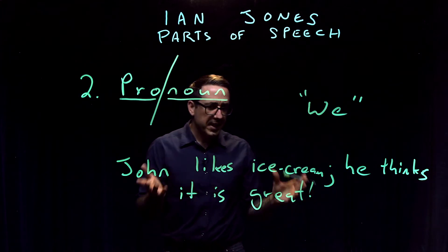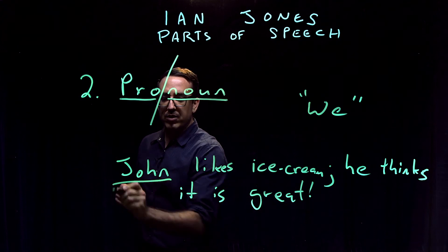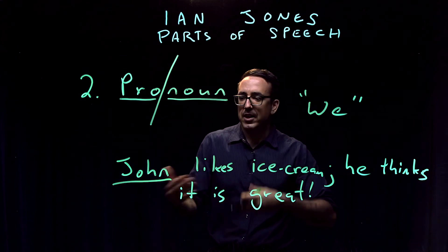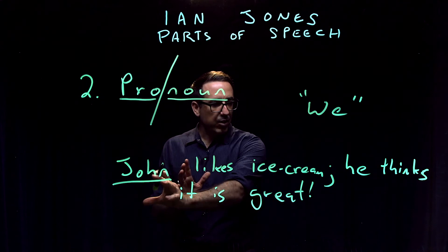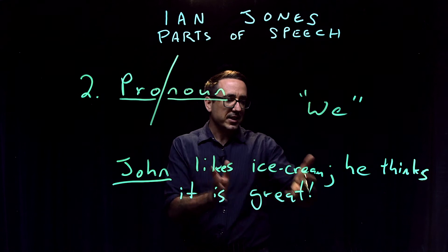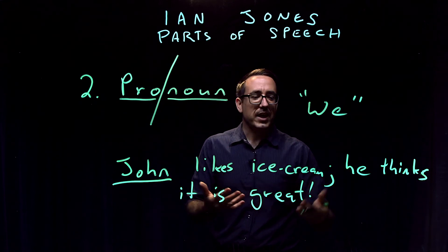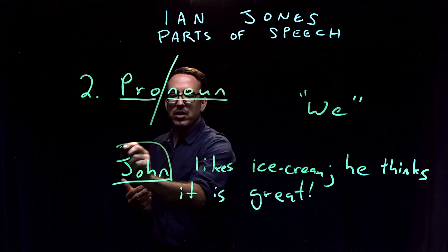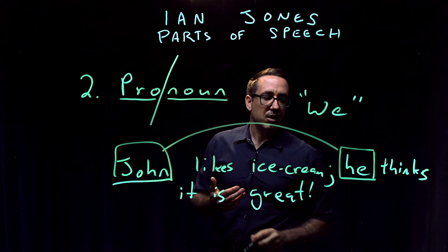Fantastic sentence, right? John likes ice cream. He thinks it is great. So here's our noun. Again, it's a proper noun - a person's name, capitalized. But we don't want a sentence that reads like 'John likes ice cream. John thinks it is great.' It gets repetitive and boring. So we replace the noun with a pronoun, the word 'he.'